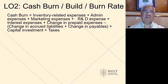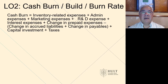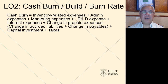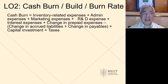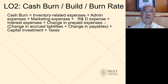Let's do some venture math: cash burn, build, and burn rate. Starting with cash burn — this is a measure of how much money you spend running your business. We break it into inventory-related expenses, namely how much you have to spend on inventory: the combination of cost of goods sold and the increase in your inventory levels. It's not sufficient to just have enough money to pay for your cost of goods sold — if you're growing, you're building your inventory, and that takes cash. So it's a combination of the income statement measure of cost of goods sold and the balance sheet measure of the change in inventory.